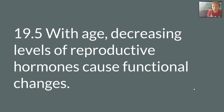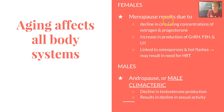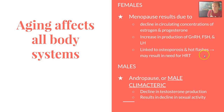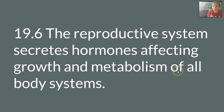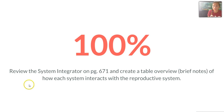Section 19-5 discusses the effects of aging. Menopause results from a decline in circulating concentrations of estrogen and progesterone, with an increase in GnRH, FSH, and LH. This is linked to osteoporosis and hot flashes — the hot flashes are usually a result of the FSH and LH increase. For some females this is mild; for others it is severe and may require hormone therapy. Males experience andropause, or male climacteric — a decline in testosterone production that usually results in a decline in sexual activity. Section 19-6 discusses how other body systems affect the reproductive system; reviewing page 671 with a table overview is recommended.